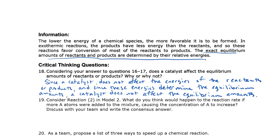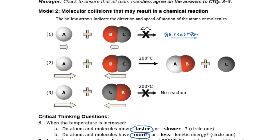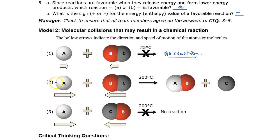In our equilibrium activity, you might remember it took 23 seconds to reach equilibrium. If you put a catalyst in, maybe it would only take two or three seconds, but the final values would be the same — you just get there faster. Question 19: consider reaction 2 in model 2. What would happen to the reaction rate if more A atoms were added to the mixture, causing the concentration of A to increase?